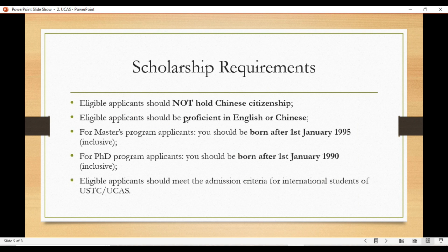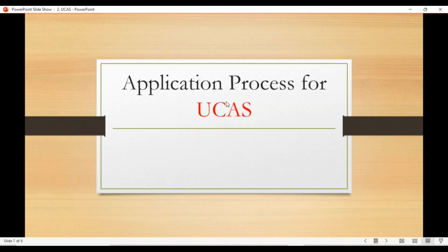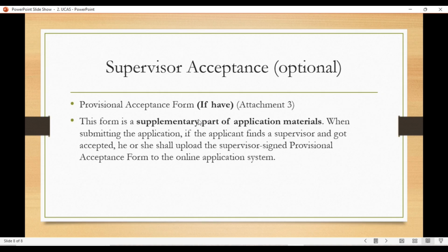Scholarship requirements: you should have non-Chinese citizenship. The applicant should be proficient in English or Chinese. For master's program you should be born after 1st January 1995, and for PhD after 1st January 1990. You should meet the admission criteria for these universities. Importantly, you cannot apply to both universities simultaneously — only one. In today's video I will guide how to apply for UCAS. The main thing for UCAS is you need supervisor acceptance, although it's optional but highly recommended.